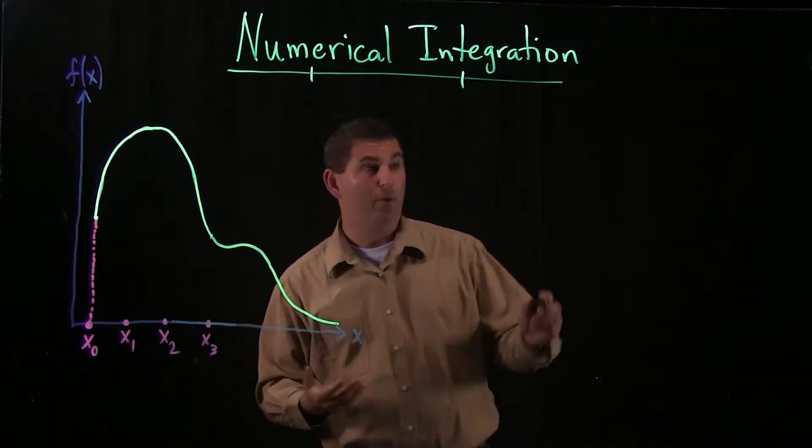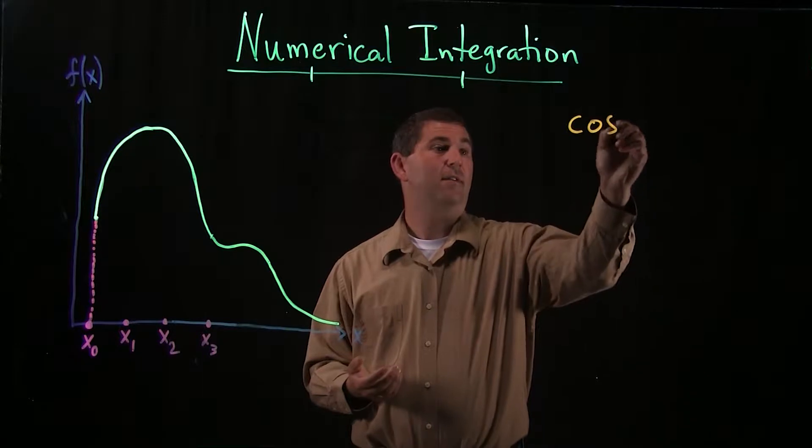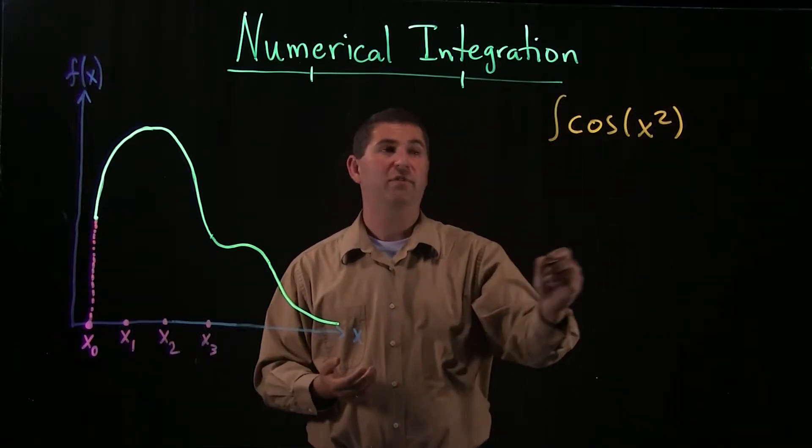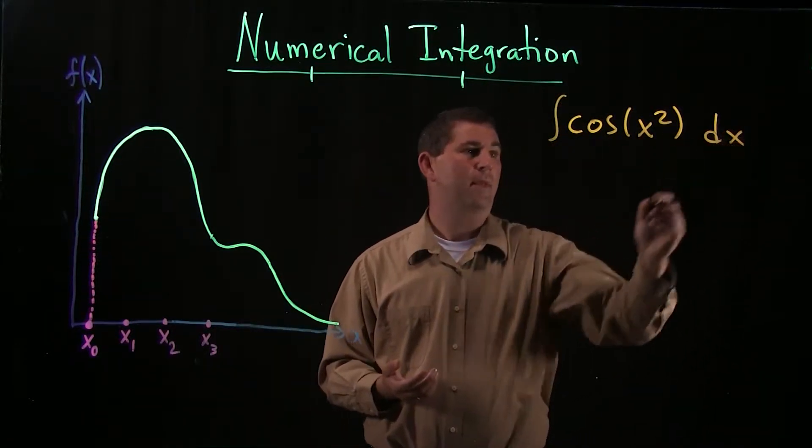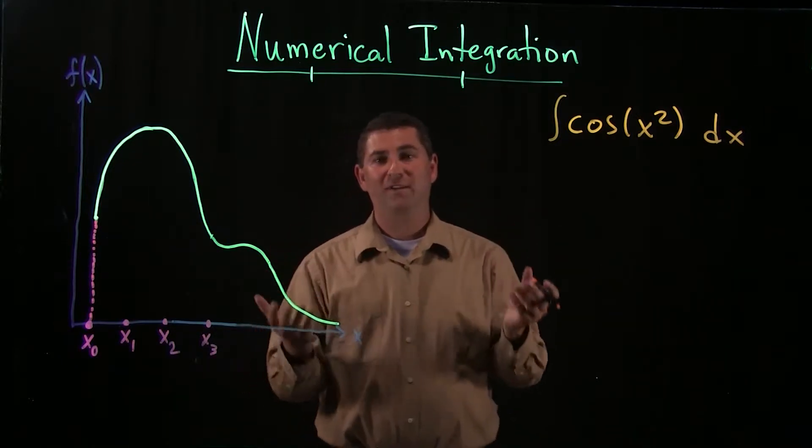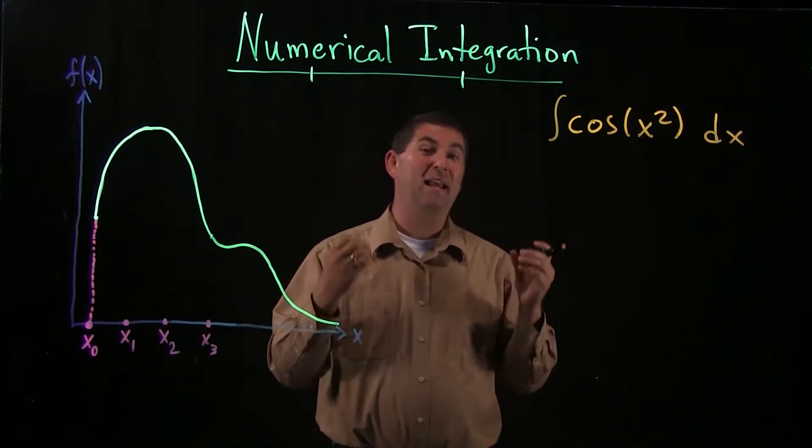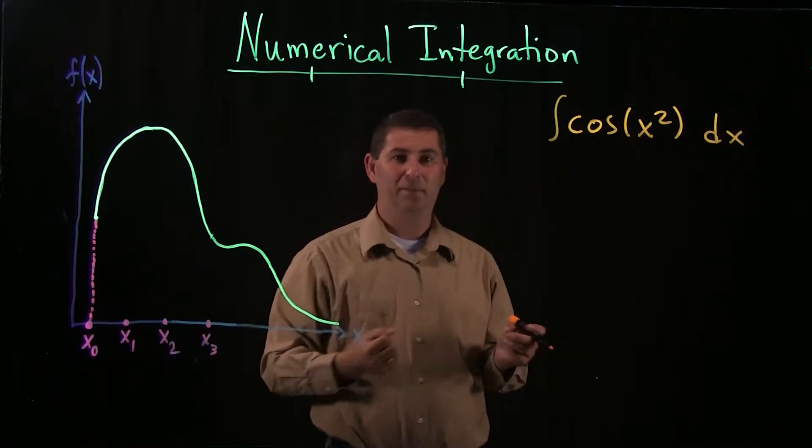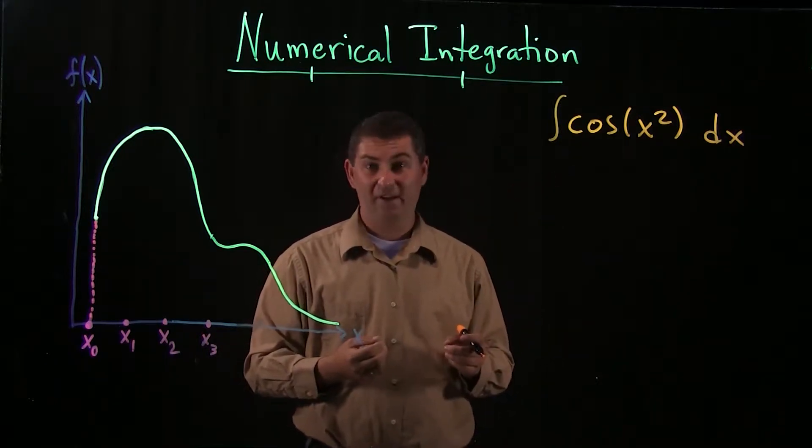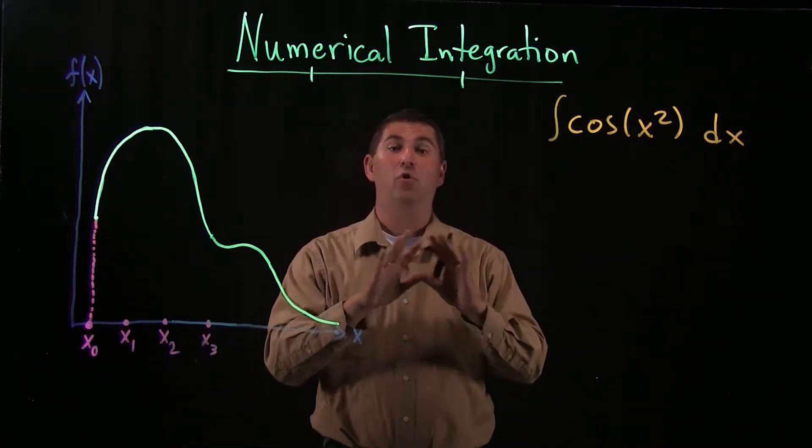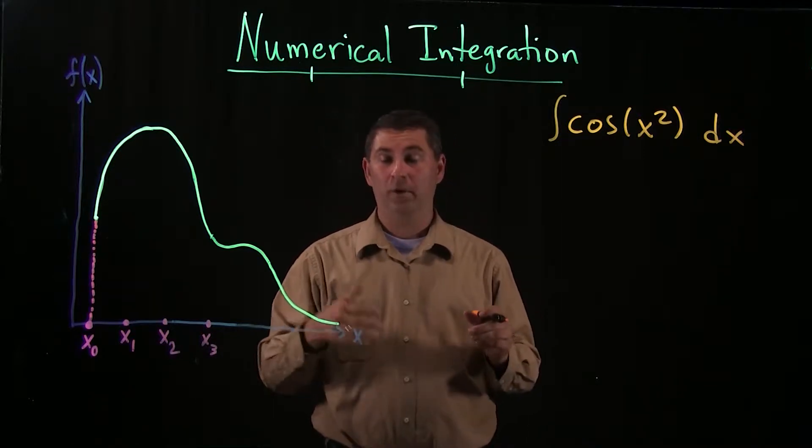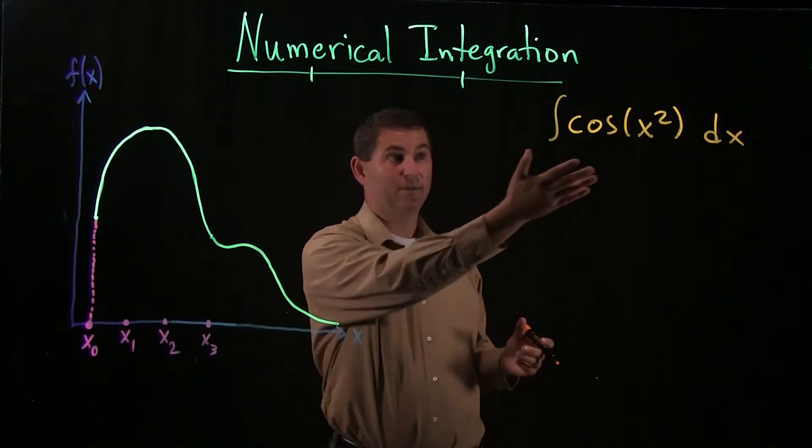So for example, say I wanted to find an antiderivative for the cosine of x squared. Now, a lot of the tricks that we've learned so far may look like they would be applicable here. It turns out none of them are.